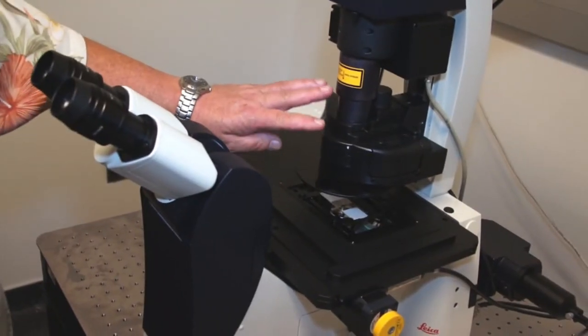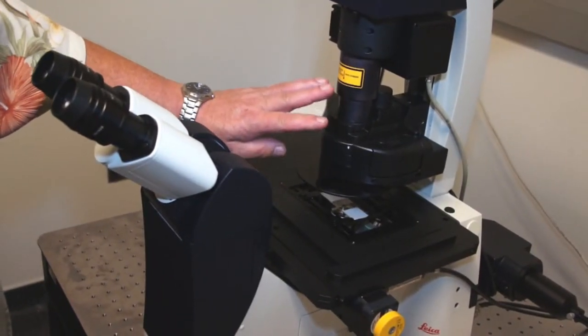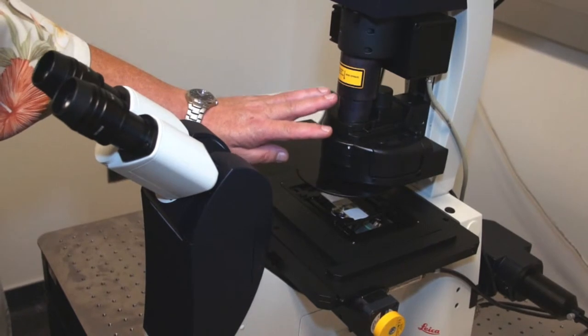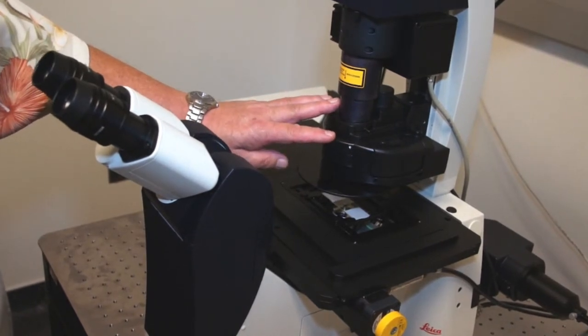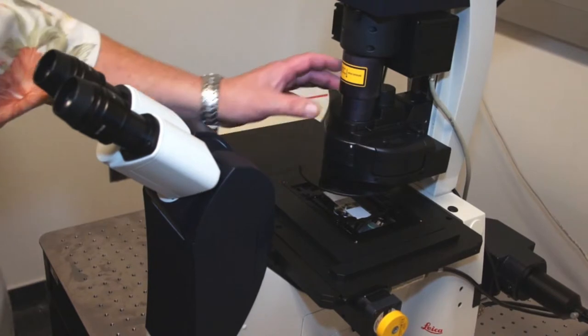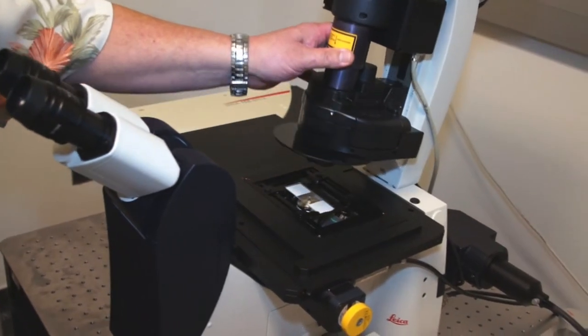As mentioned previously, we have a combination of wet objectives and dry objectives on the Leica Confocal microscope. In order to go from a dry objective to a wet objective, we must first rock the condenser out of the way.